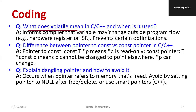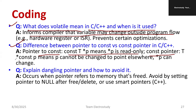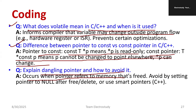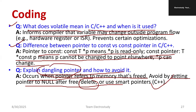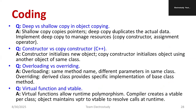What does volatile mean in C or C++? It informs the compiler that a variable may change outside the program flow — similar to the concept of local and global variables in Python. Difference between pointer to const and const pointer: with pointer to const, `*p` is read only; with const pointer, the pointer itself cannot be changed but `*p` can. Explain the dangling pointer: it occurs when a pointer refers to memory that has been freed. Avoid it by setting the pointer to null after free or deletion, or use smart pointers in C++. Shallow copy versus deep copy: shallow copy copies the pointer while deep copy duplicates the actual data — shallow copy requires less memory, deep copy needs more.